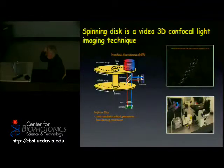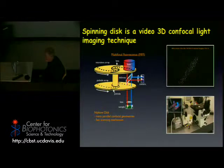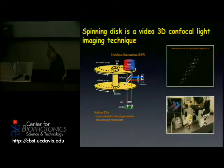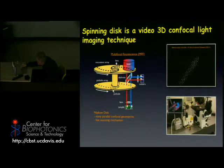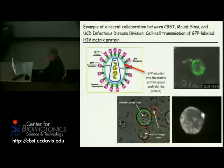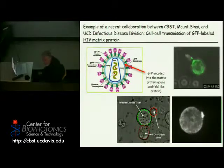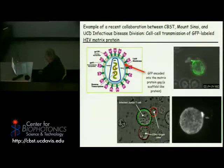One problem with that technique is you have to scan a single pinhole back and forth, which takes quite a bit of time. A way of automating that is using multiple pinholes on a spinning disk — each pinhole collects light for a portion of the image, the disk spins to scan the whole image, and instead of a single detector you use a camera. Using this spinning disk microscope, you can collect 3D movies.